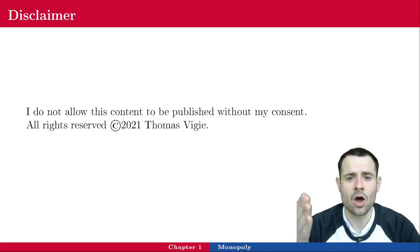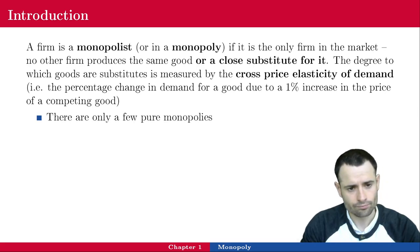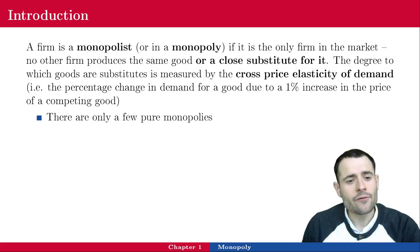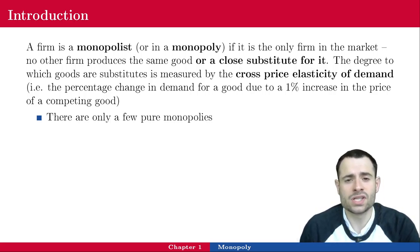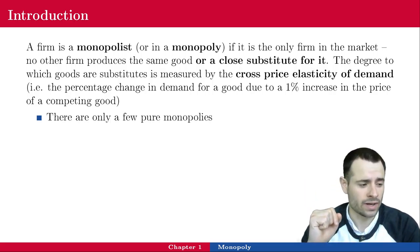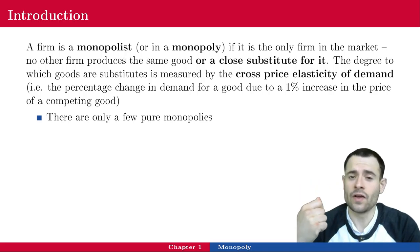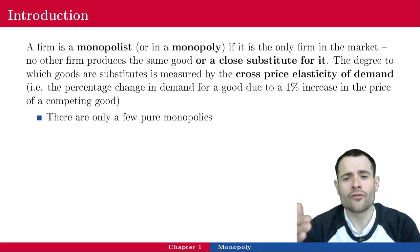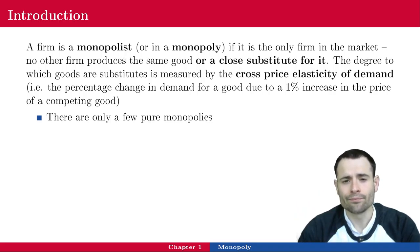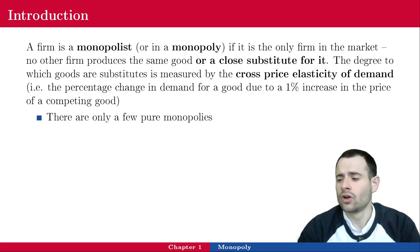A firm is called a monopolist, or is in a monopoly, if it is the only firm in the market — no other firm produces the same good or a close substitute for it. The close substitute part is very important. Most firms in real life produce their own goods. Think about Coca-Cola: they make their cola, but it has a unique label, color, composition, bottle shape, and brand name.